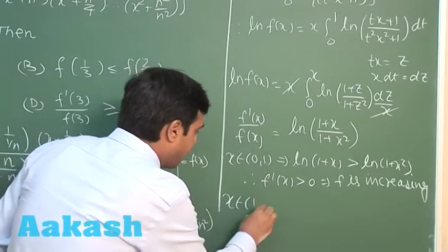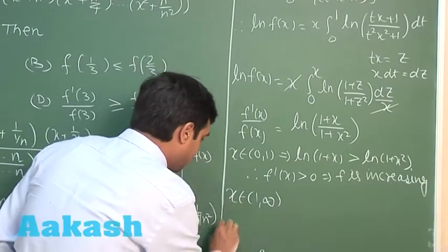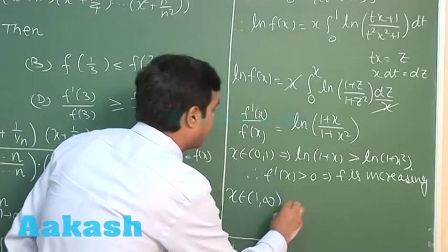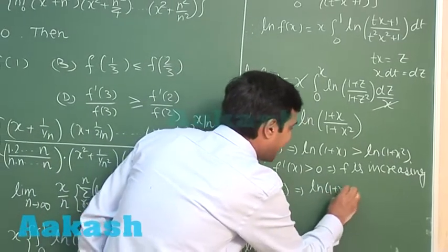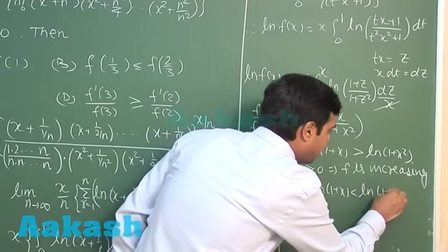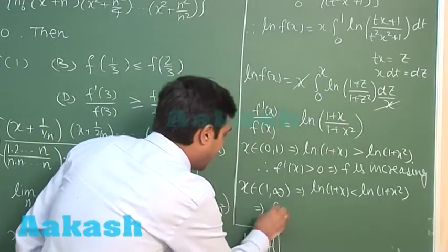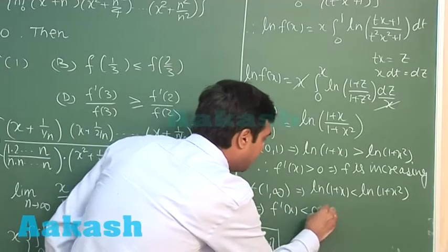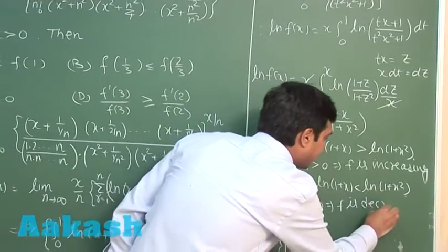For the interval (1, ∞): log(1 + x) < log(1 + x²), meaning f'(x)/f(x) < 0, so f'(x) is negative and f is decreasing on (1, ∞).